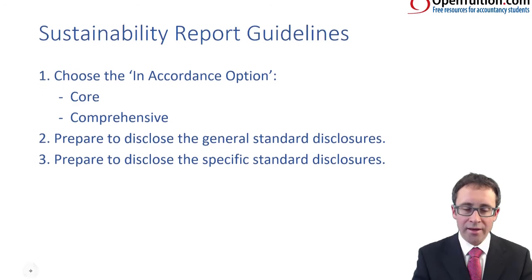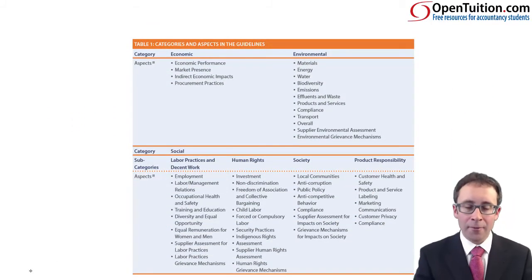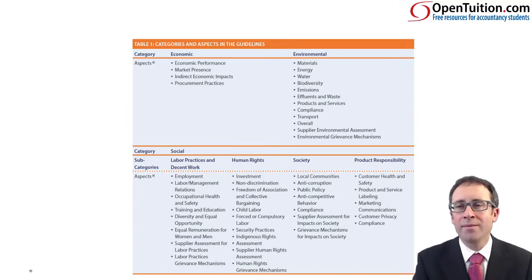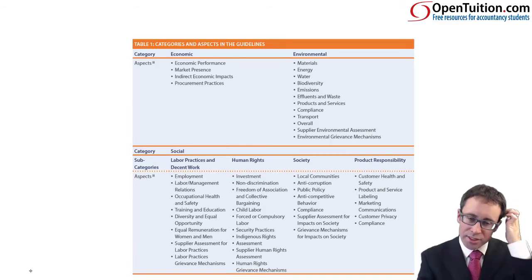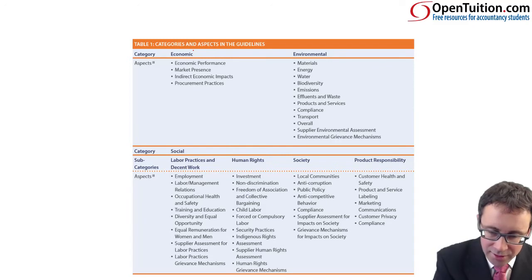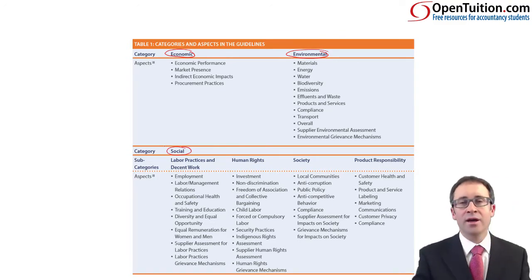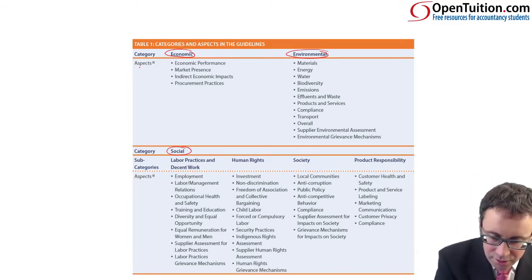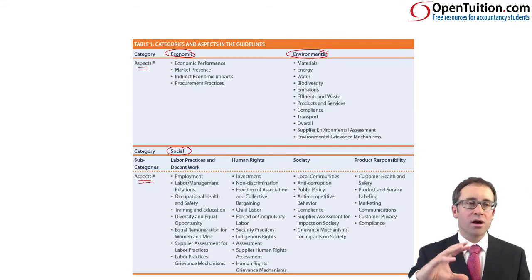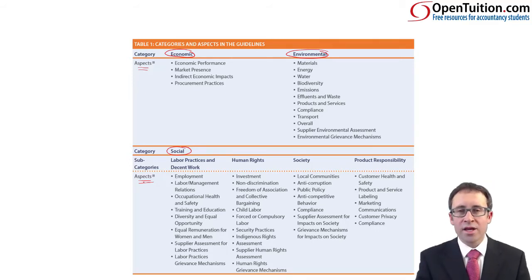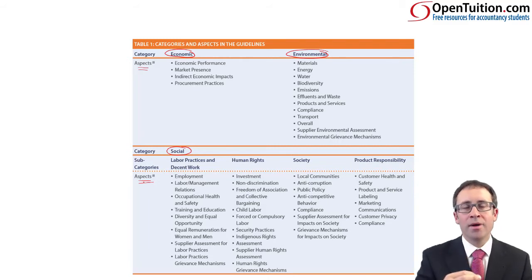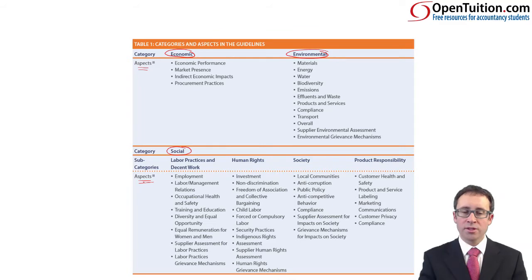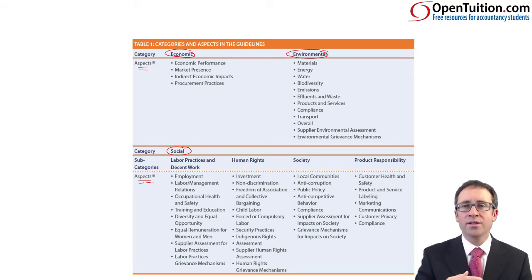I really can't see the exam questions going any further than that. So looking at the different categories — economic, environmental, and social — you can see that the social category is split out further into labour, human rights, society, and product responsibility. I draw your attention to the aspects — the subsections of each individual category — which provide a focus in terms of what you should be reporting on, whether it's the core or the comprehensive option. You need to report on the material aspects.